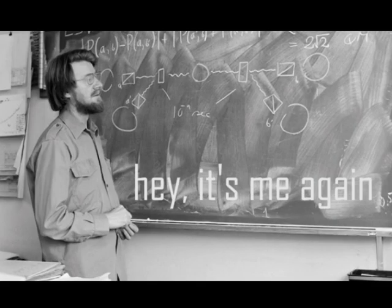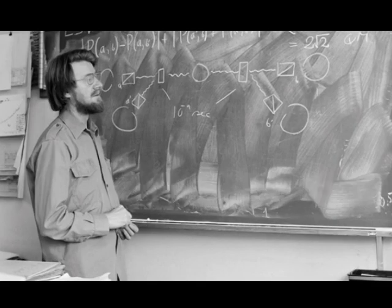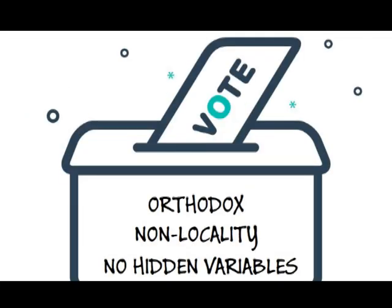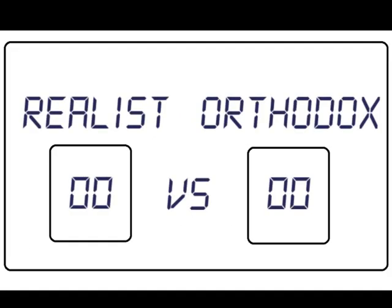Contrary to what many believed, Bell did not prove that hidden variable theories did not exist. But what he did do was give a significant upvote to the orthodox view of quantum mechanics by ruling out local hidden variable theories as a viable explanation for quantum mechanics.